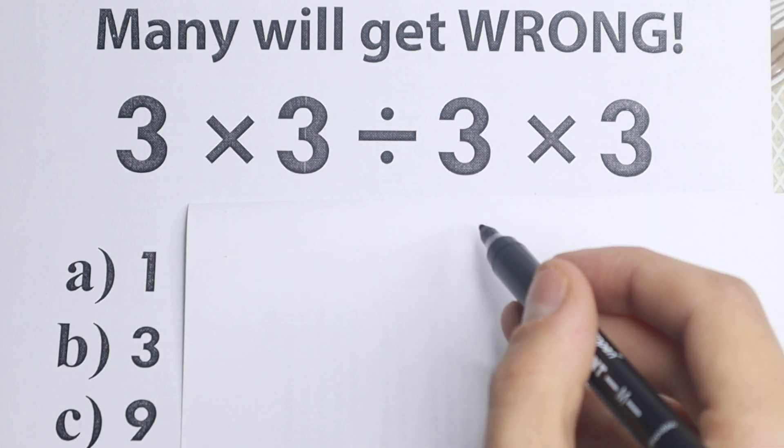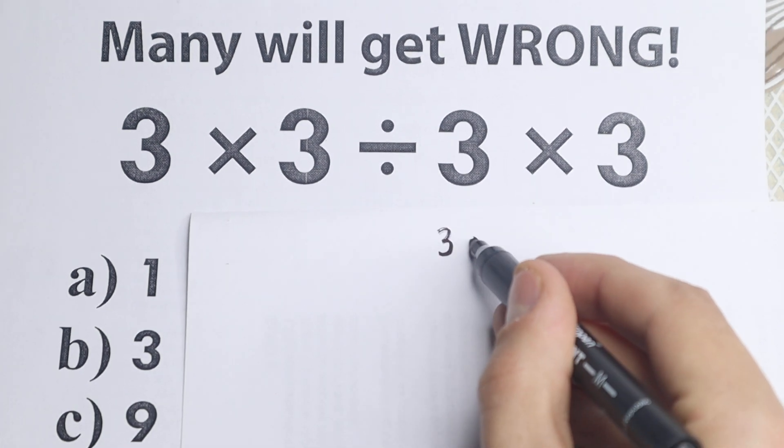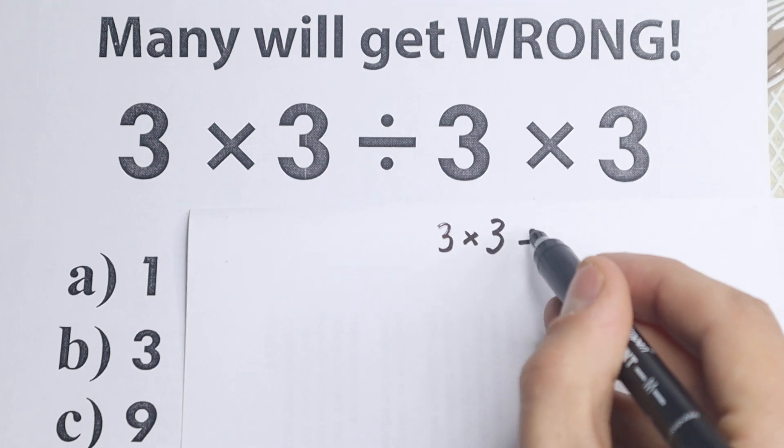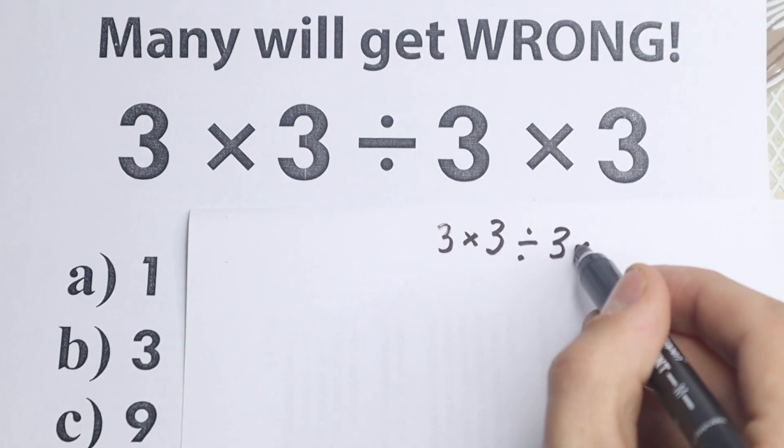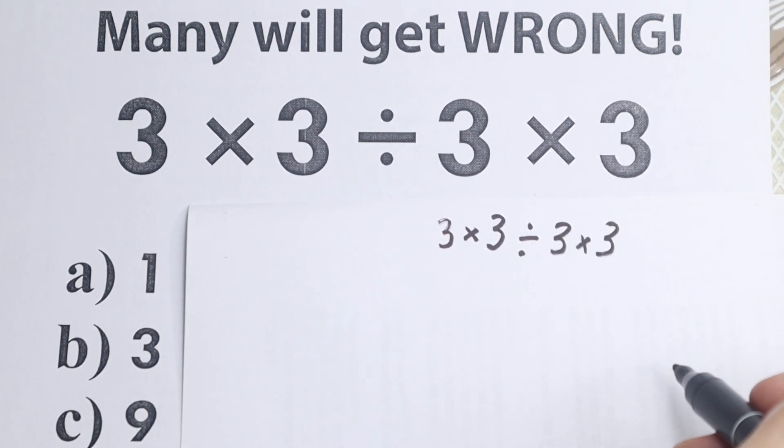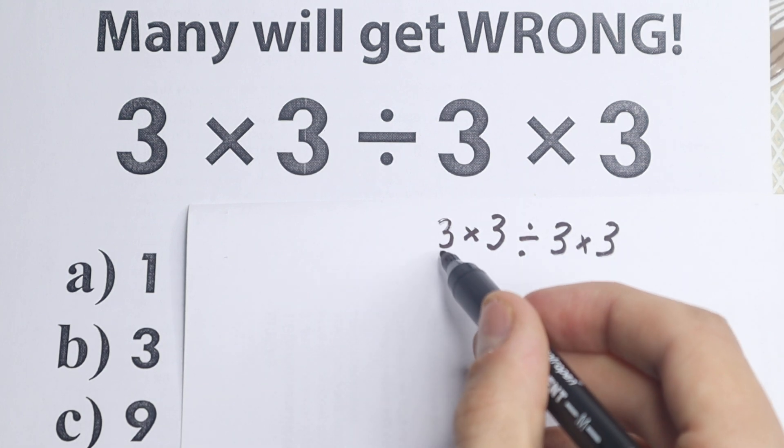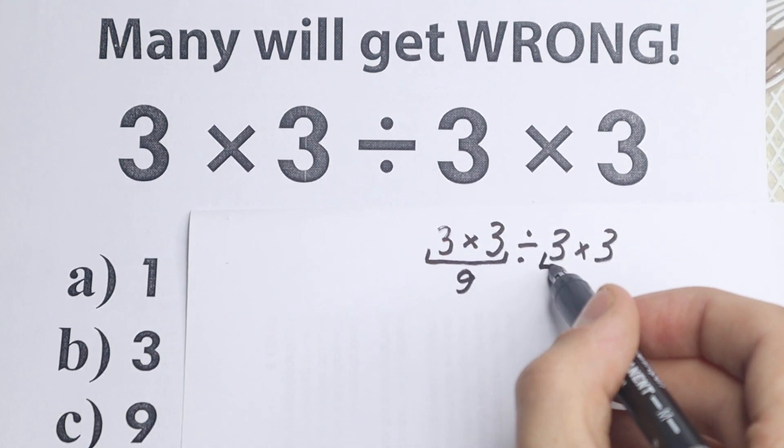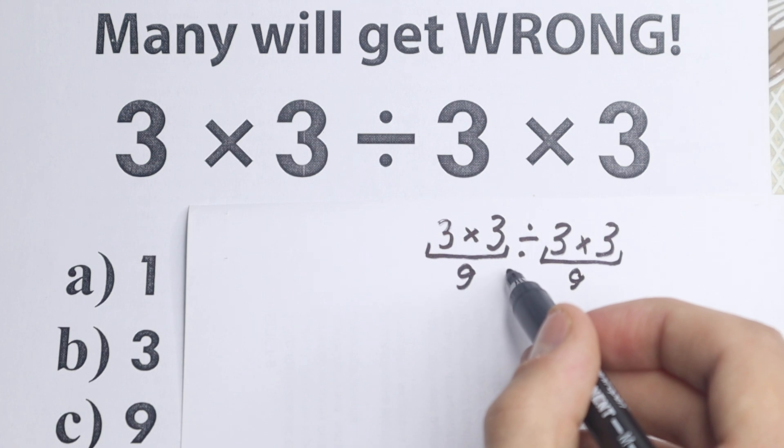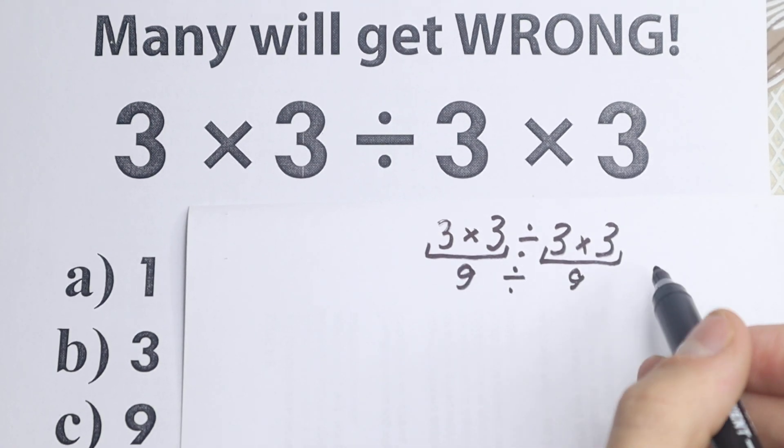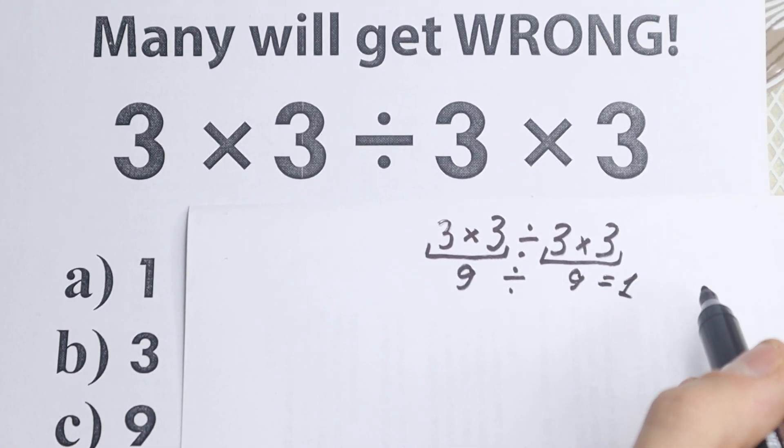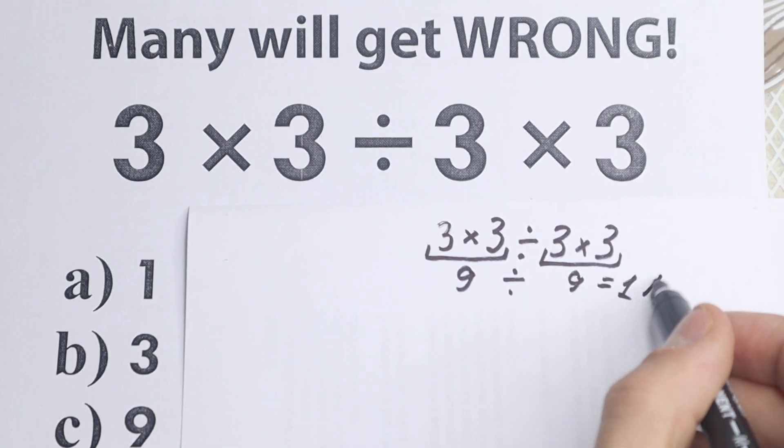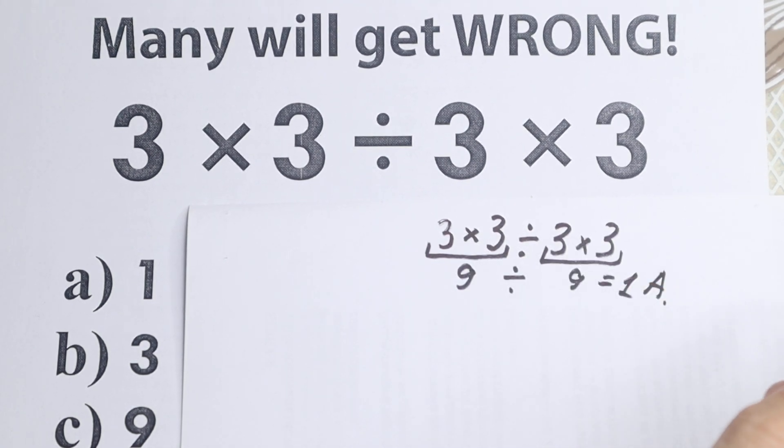But what is the first way a lot of students solve it? Take a look. We have 3 times 3 divided by 3 and times 3. So I just rewrite this problem once more. A lot of students solve it like that. They say 3 times 3 equal to 9 on the left hand side, and 3 times 3 on the right hand side equal to 9 as well. And as a result right here division, so we have 9 divided by 9 equal to 1. A lot of students say option A is correct, 9 divided by 9, and it's a solution to this problem.